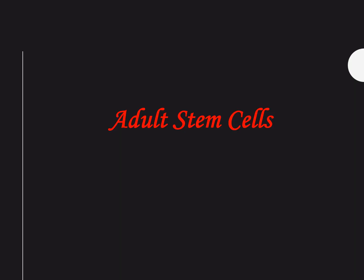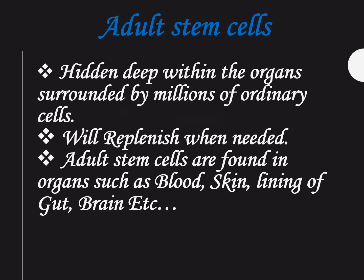Next, we move on to adult stem cells. Adult stem cells have been identified in many organs and tissues, including the brain, bone marrow, peripheral blood, blood vessels, skeletal muscle, skin, teeth, gut, liver, and more. They are thought to reside in specific areas of each tissue. Scientists suggest that some types of stem cells may remain non-dividing for a very long period of time, which is why adult stem cells are considered important. They are hidden deep inside the body, within the cell.